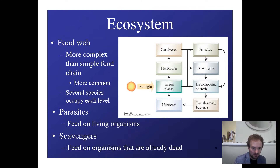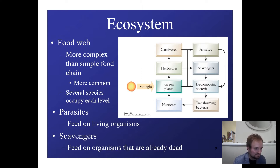At any one given level of these food webs or food chains, you may have several species occupying each level, and there may be all sorts of different relationships in how each level interacts. There are also parasites, which feed on living organisms, and scavengers, which feed on dead organisms.